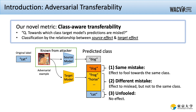Therefore, we propose a novel metric called class-aware transferability to look closer at the phenomenon. Class-aware transferability differentiates the cases of same mistakes, where the target model is fooled towards the same class as the source model, and different mistakes, where the source and target models were fooled towards different classes. In this way, we can analyze how the malicious effects of AEs actually transfer from a source model to a target model.